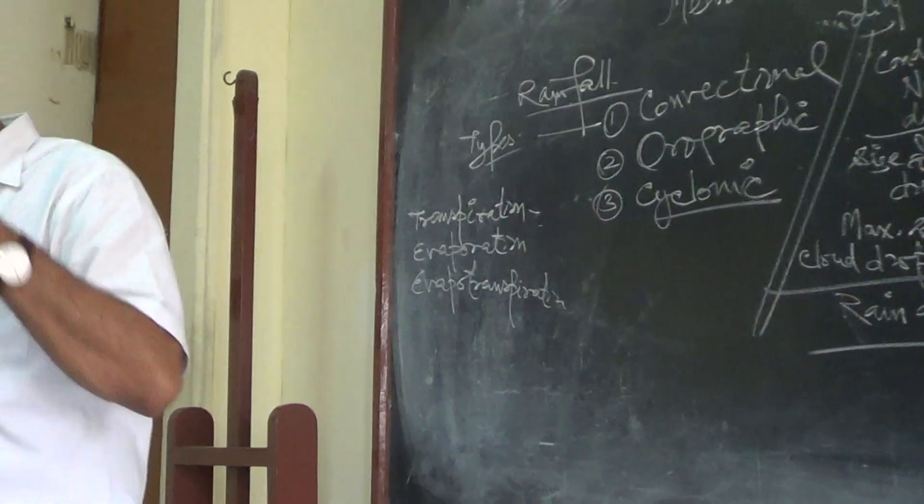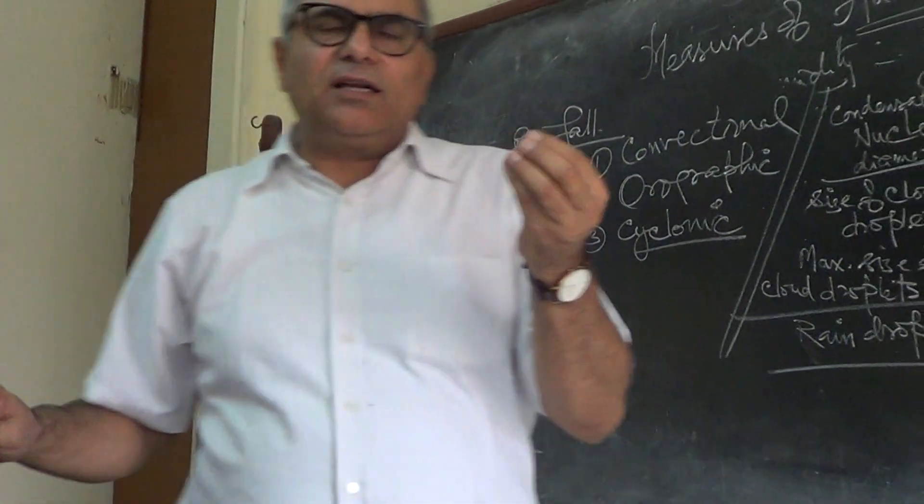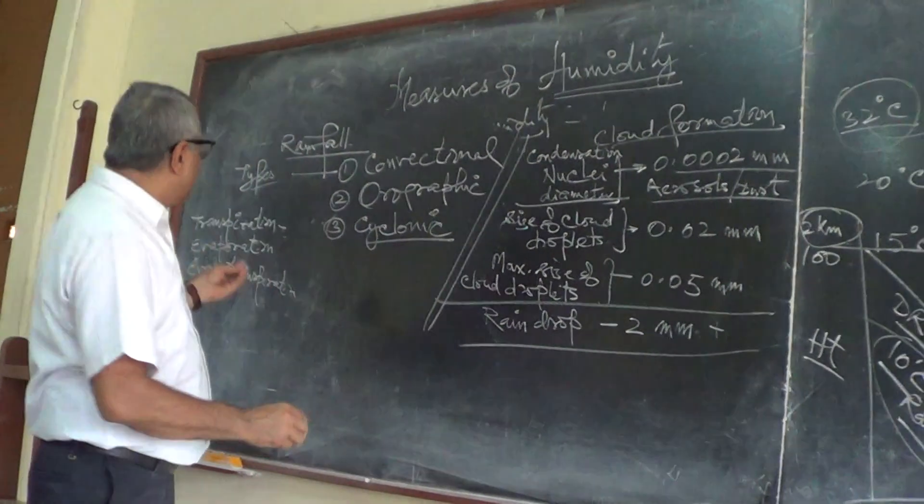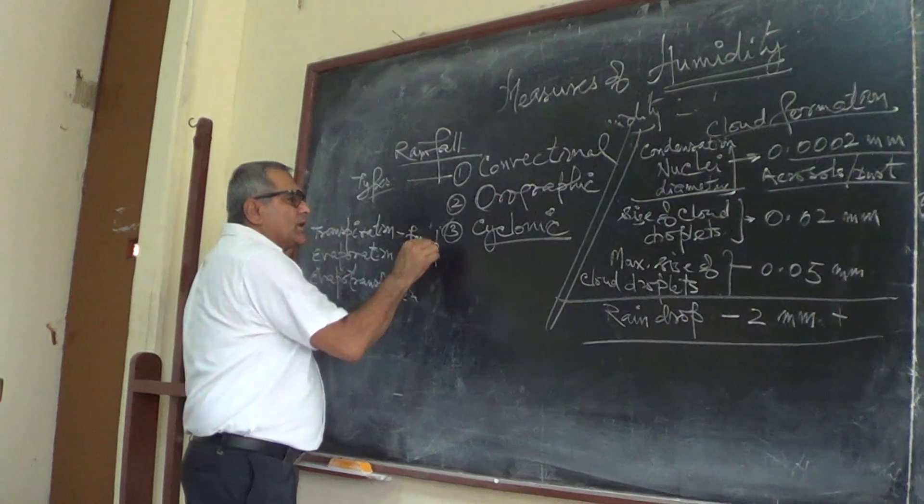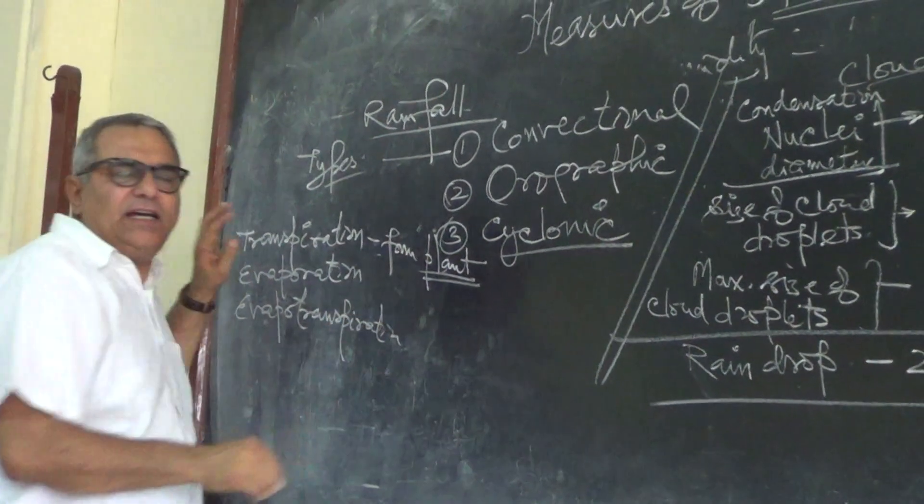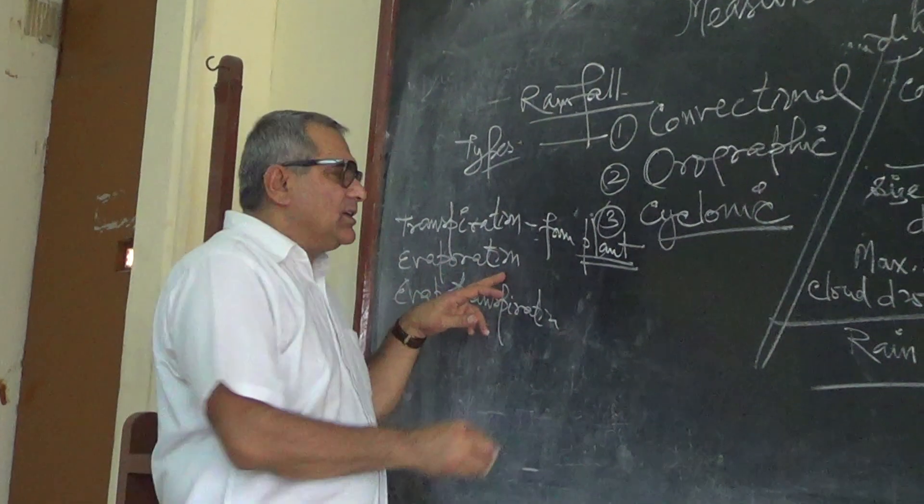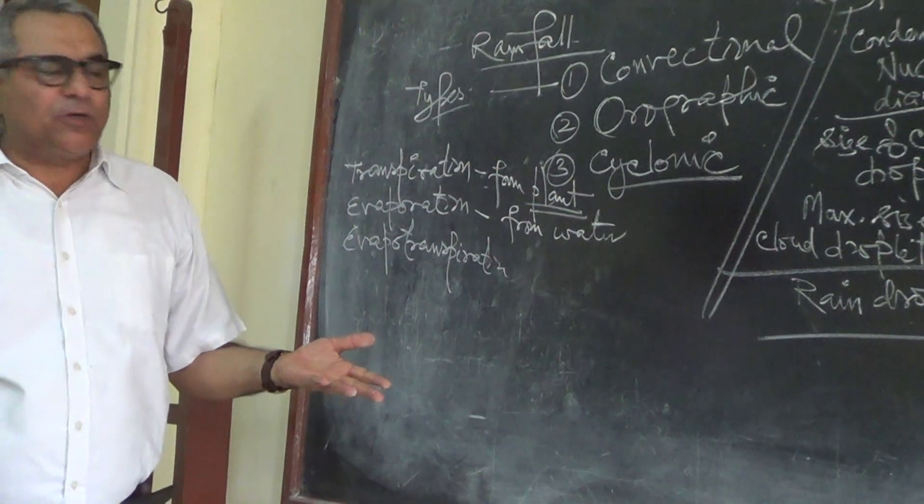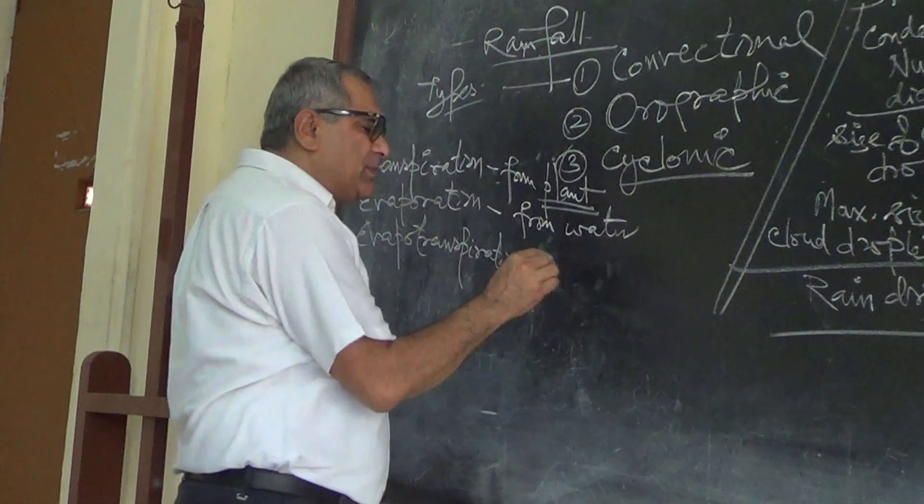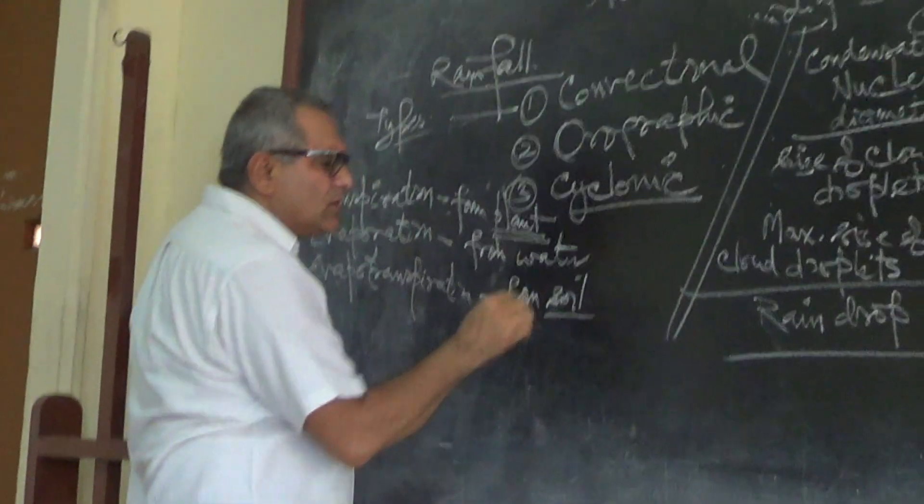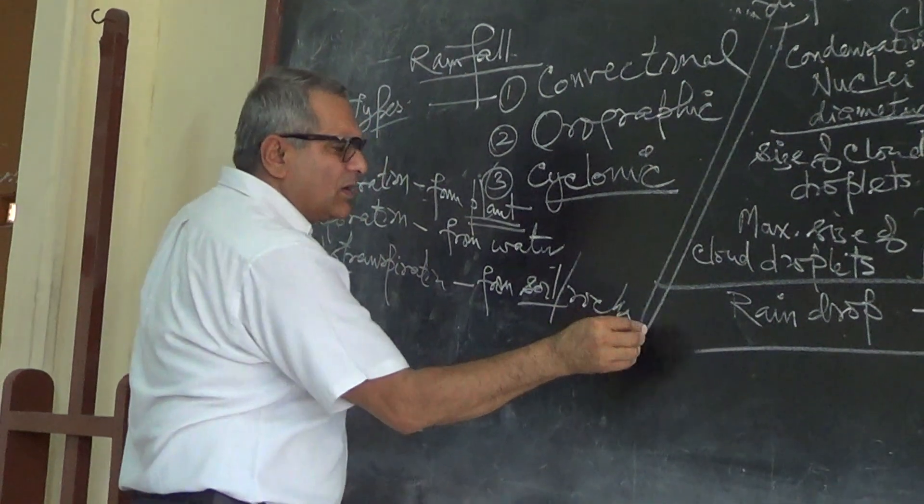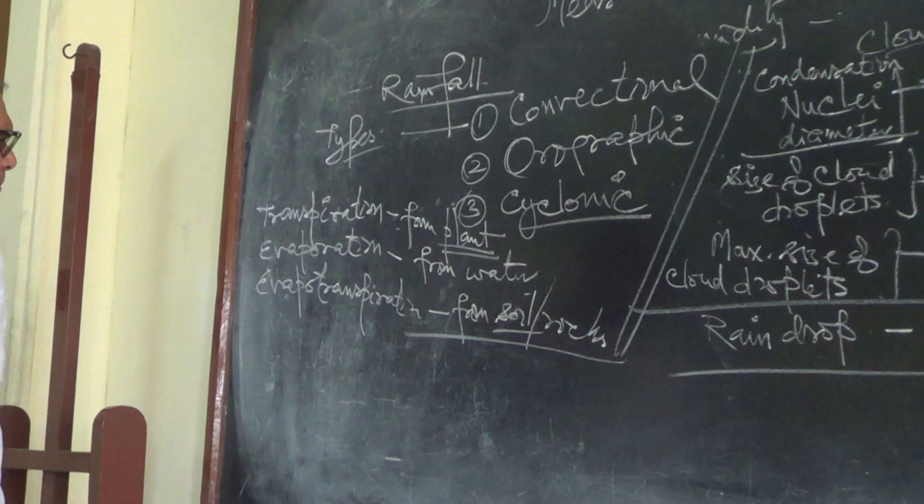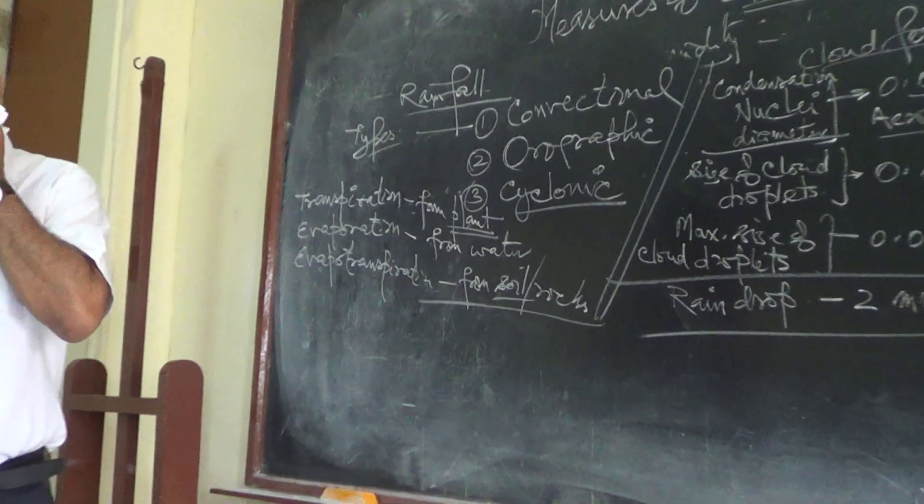Transpiration, plants are transpiring the moisture into the air. The moisture is released from plants, that is transpiration. Evaporation is from clouds, from water. So these are the three different terms, transpiration, evaporation and evapotranspiration.